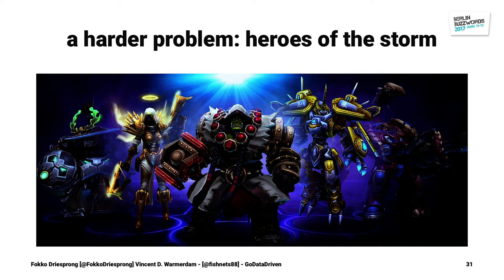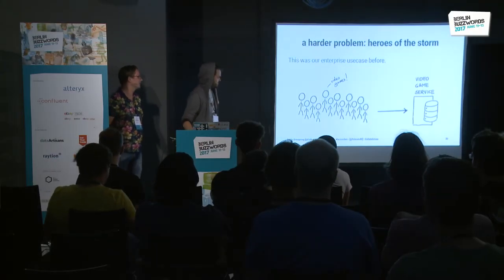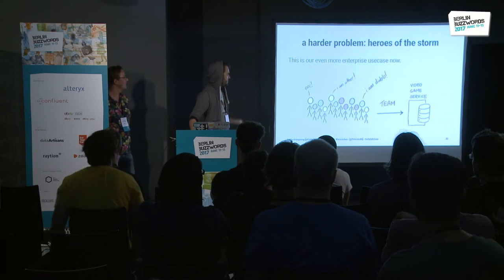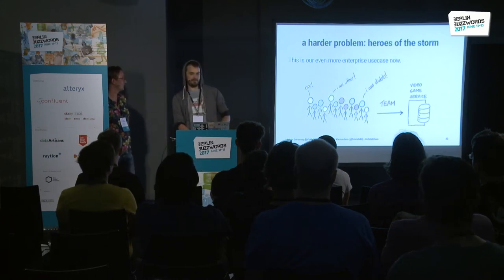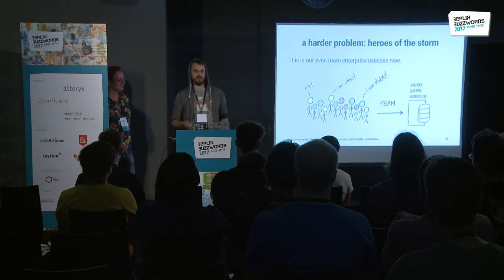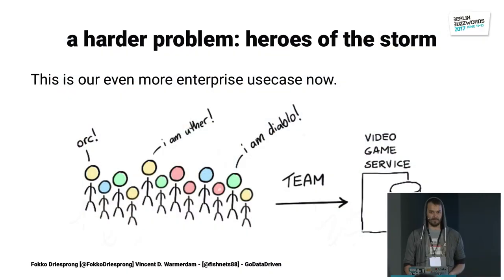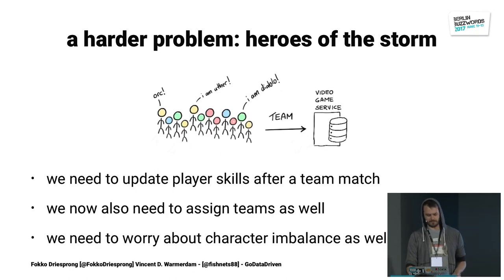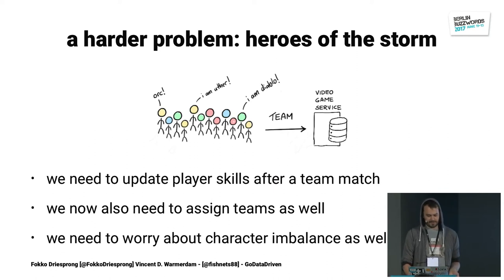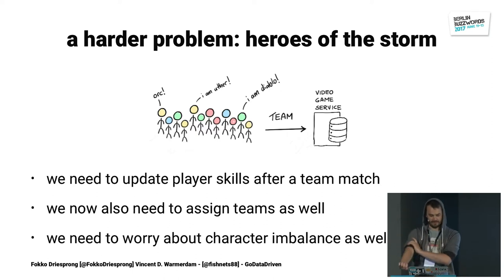In the Pokemon situation, it's always a one-versus-one game. But in Heroes of the Storm, things are different. People say they want to play a certain character, they get into a queue, and then they have to be matched up into a team. From both an engineering and machine learning perspective, this changes things and makes the problem a whole lot harder. We need to update player skills after a team match — that's different than just updating two players. We also need to assign players to teams, ensuring people of the same skill are grouped.